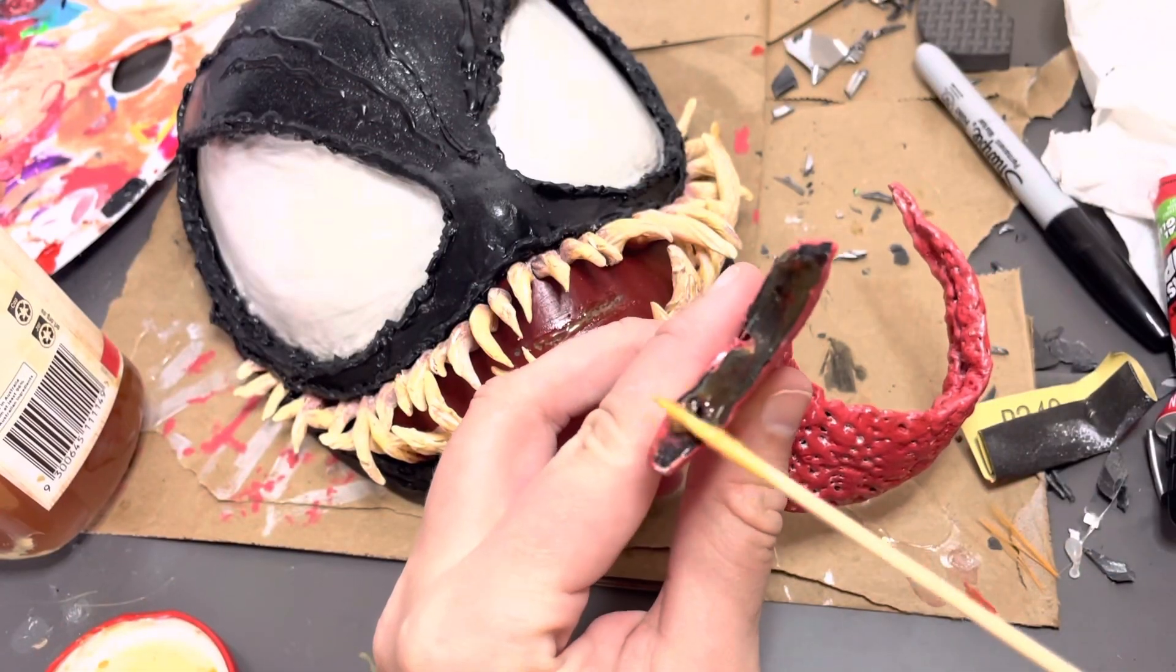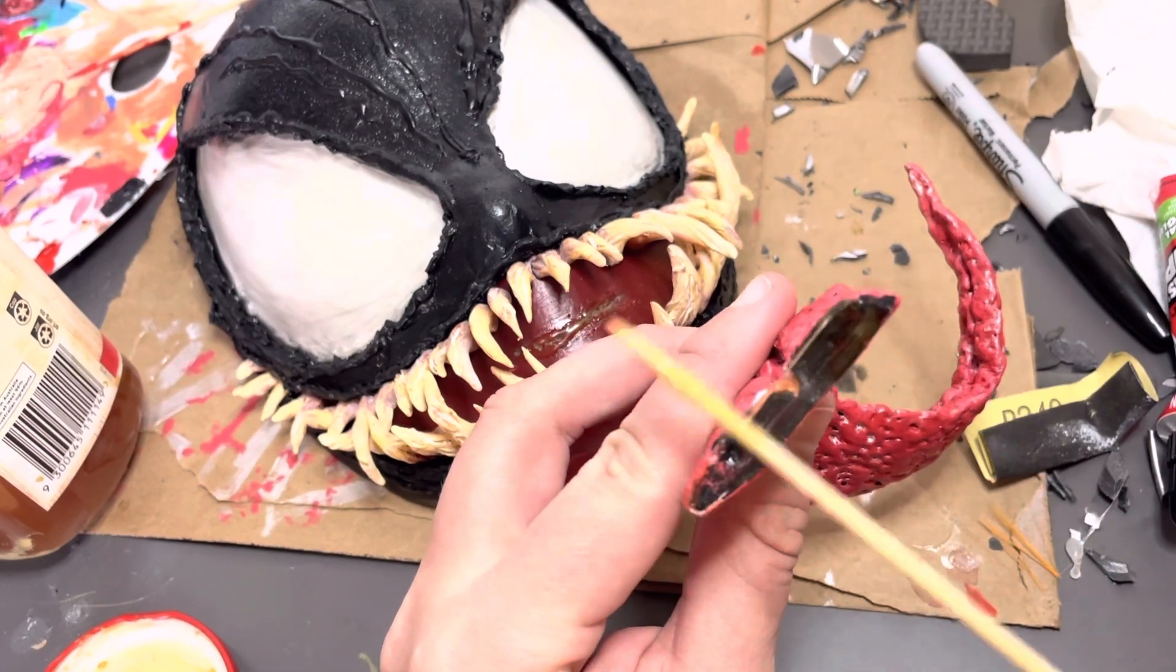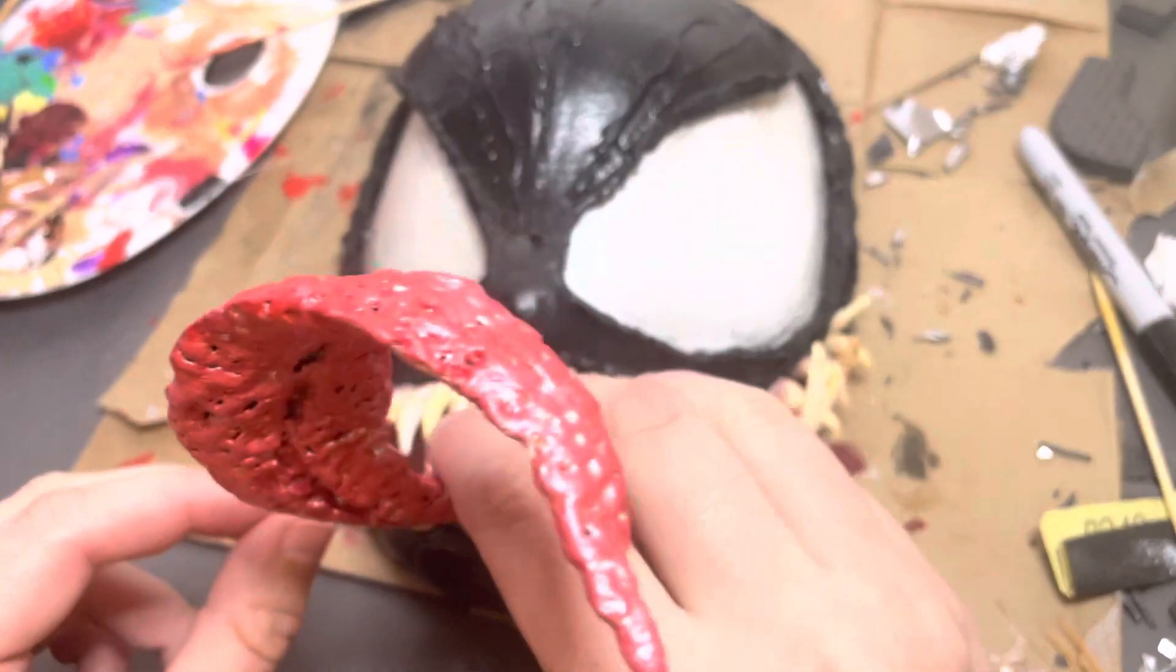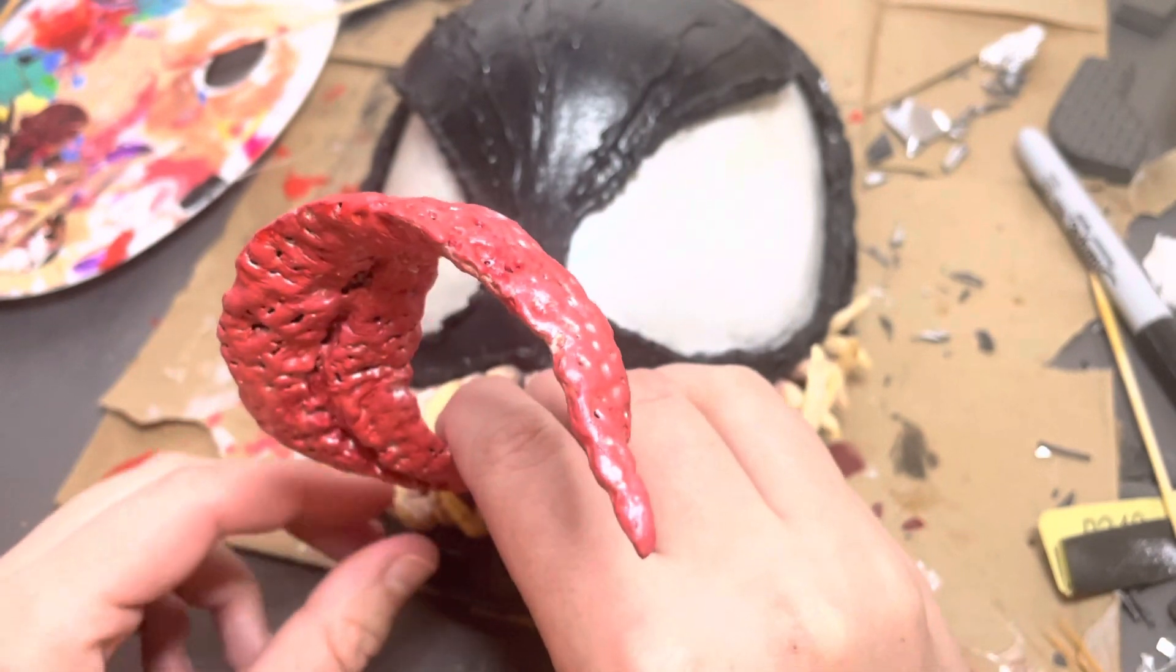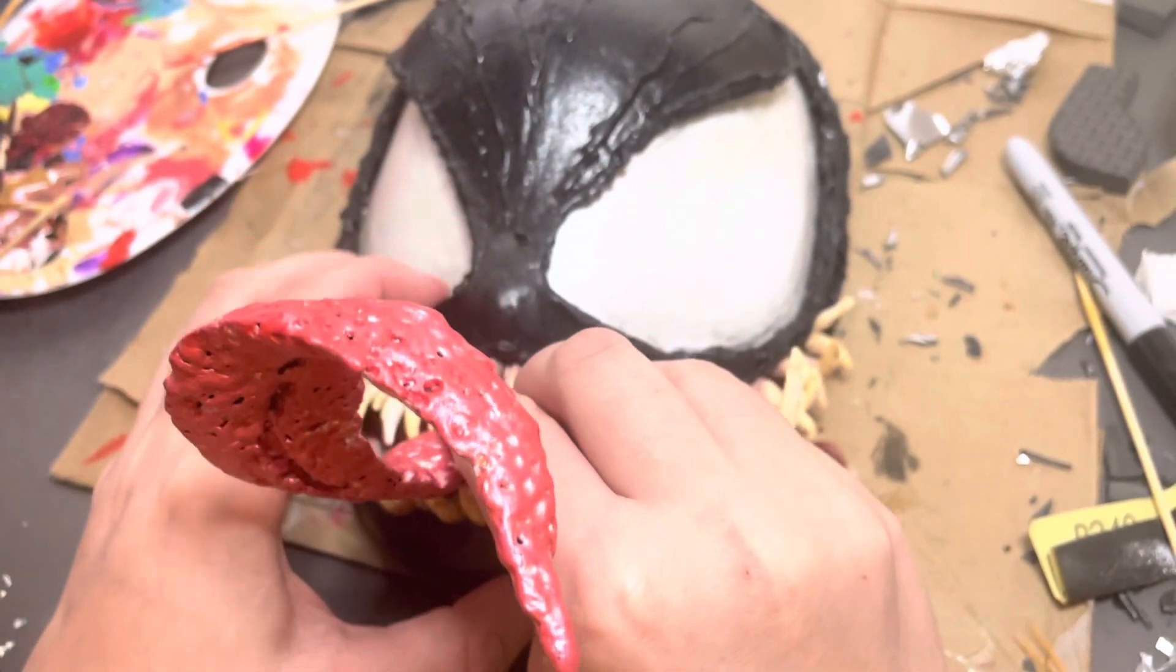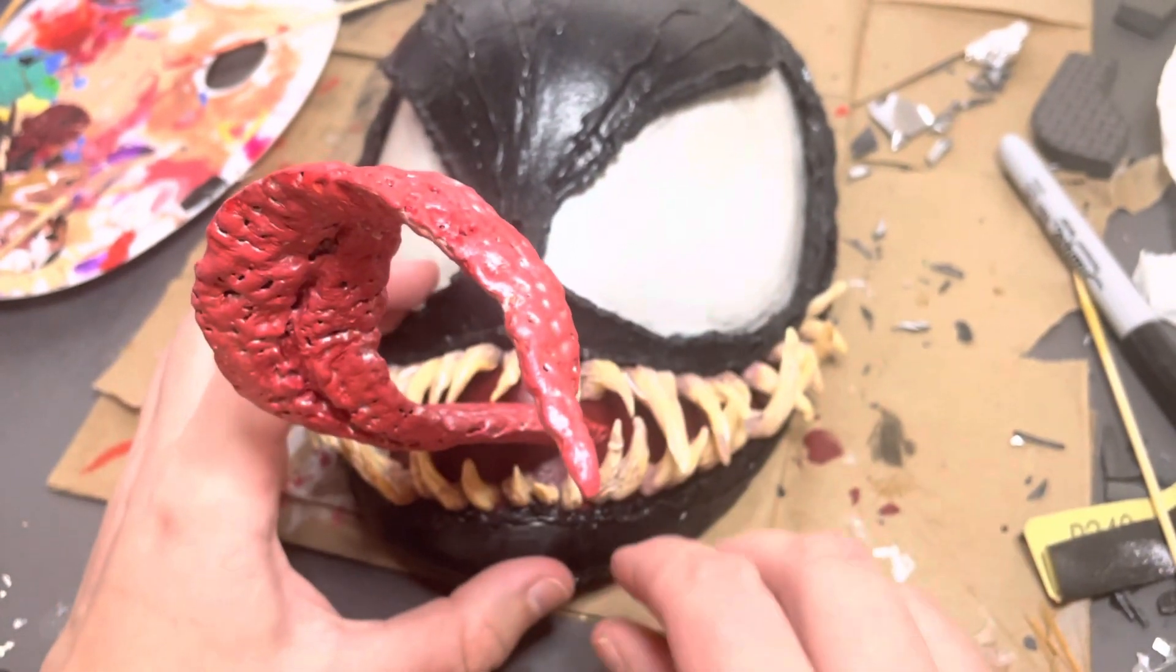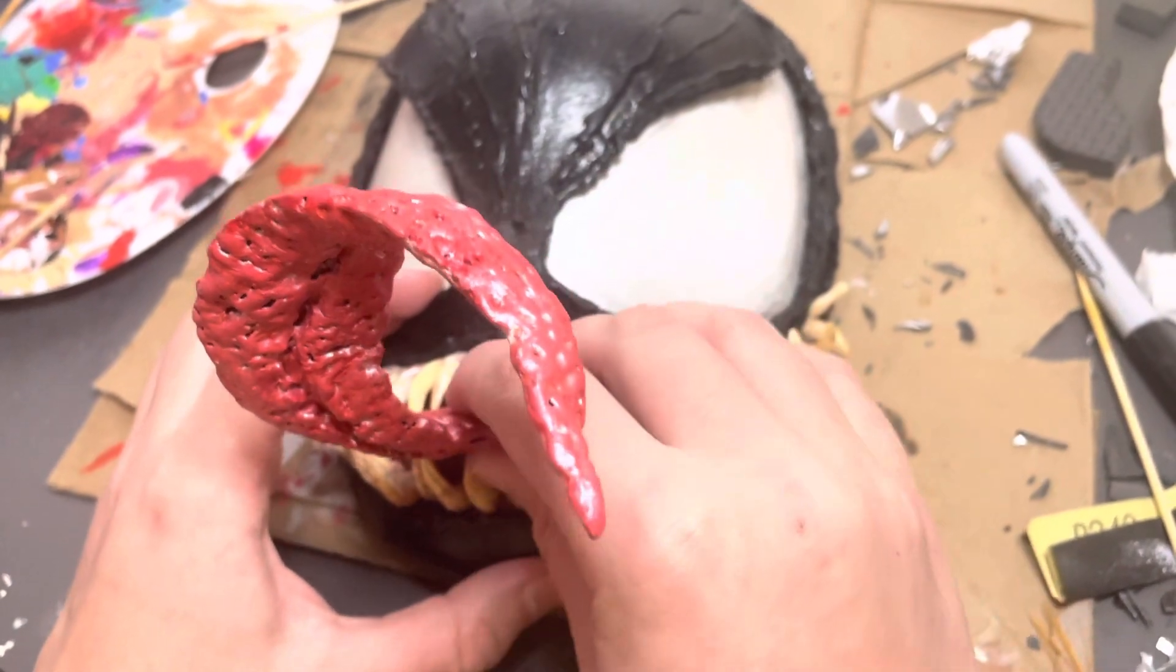Once we've glued the lights down, it's time to glue in the tongue. Apparently I didn't film it, but I finished up his eyes as well. I wanted to add a little bit more dimension, so I used that wash from earlier in black and I just went around the edges and kind of smudged it out. The absolute final touch for this project was to gloss coat the whole thing so that he'd be nice and shiny. But I didn't film that, so here's the finished product.